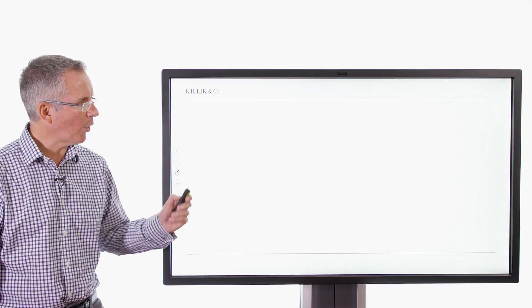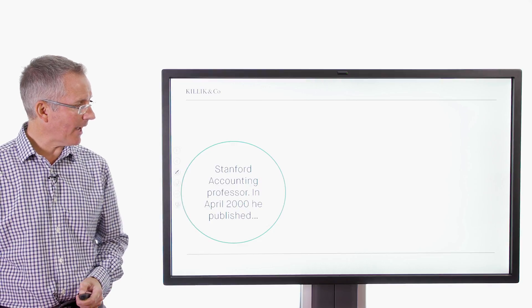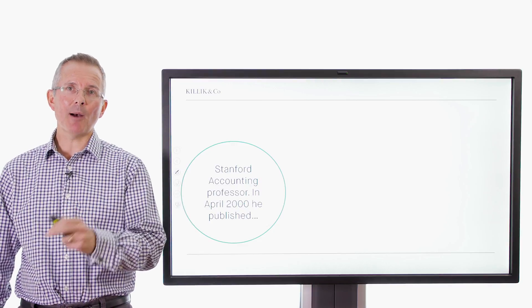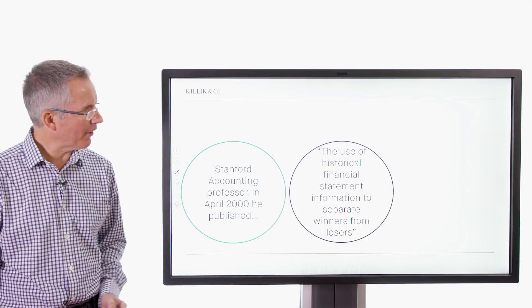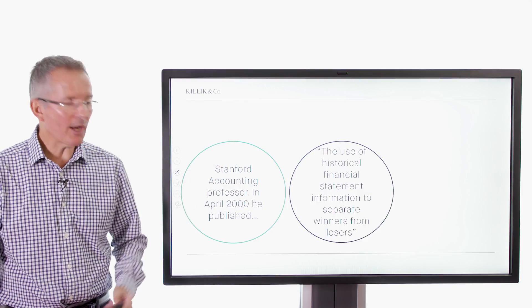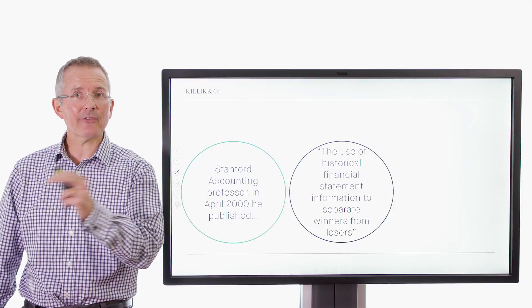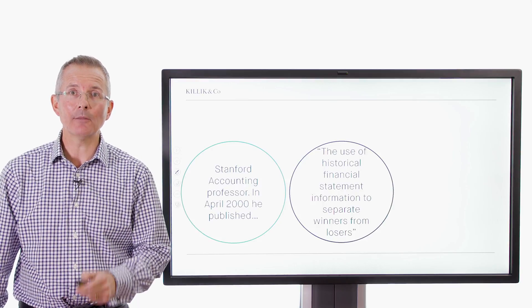Now, Joseph Piotroski was who? Well, he was a Stanford accounting professor. In April 2000, he published an important paper with a fairly lengthy title: The Use of Historical Financial Information to Separate Winners from Losers. You can see how that sounds quite useful, lengthy though the title might be.